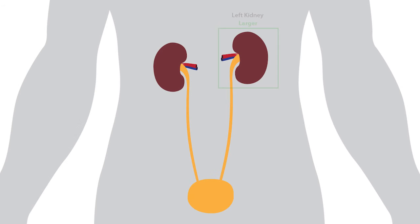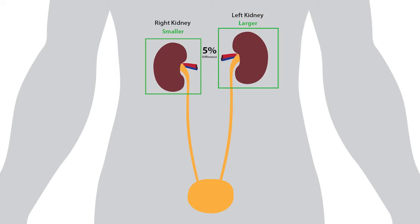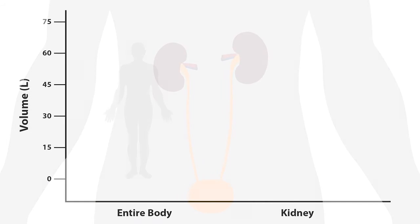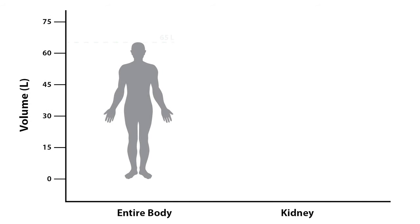They also found that the left kidney is about five percent larger than the right kidney. To put kidney size into perspective, the average person displaces 65 liters of water, while the kidney displaces 0.17 liters.